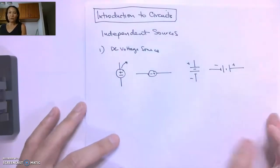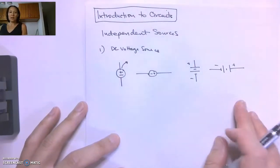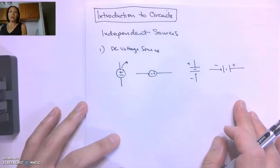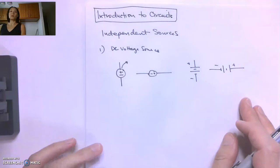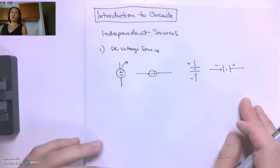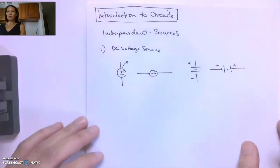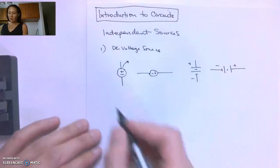And some attributes of this: they supply a constant preset voltage. The amount of current that comes out depends on what resistive load this is connected to, but the voltage source is going to be constant.